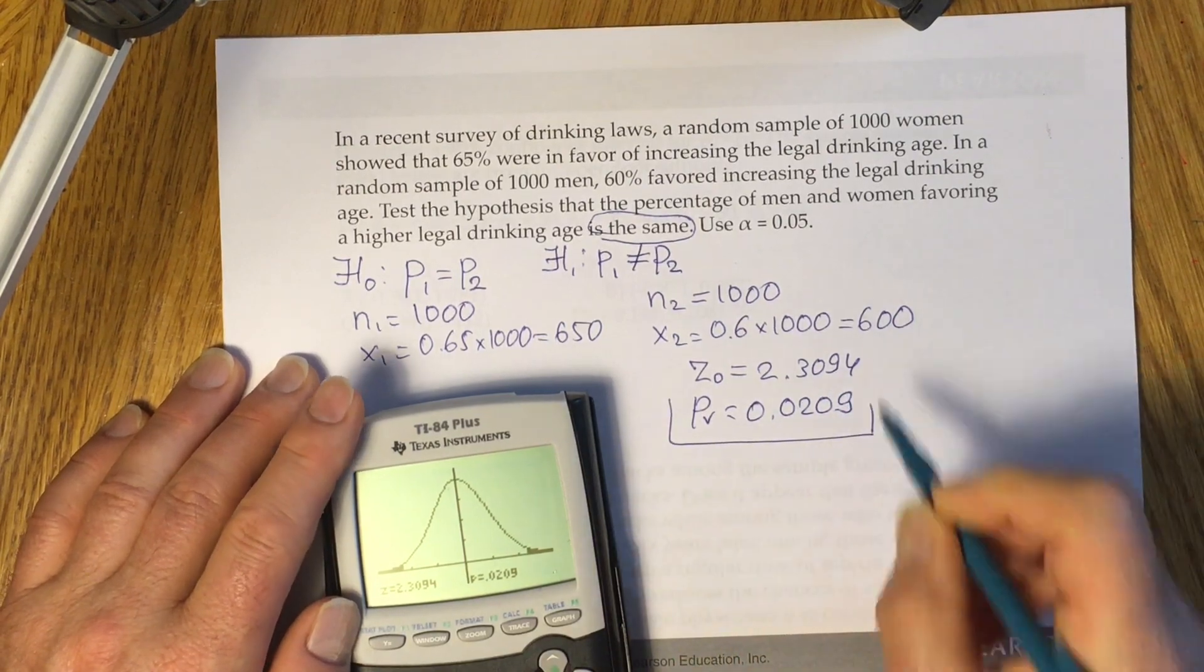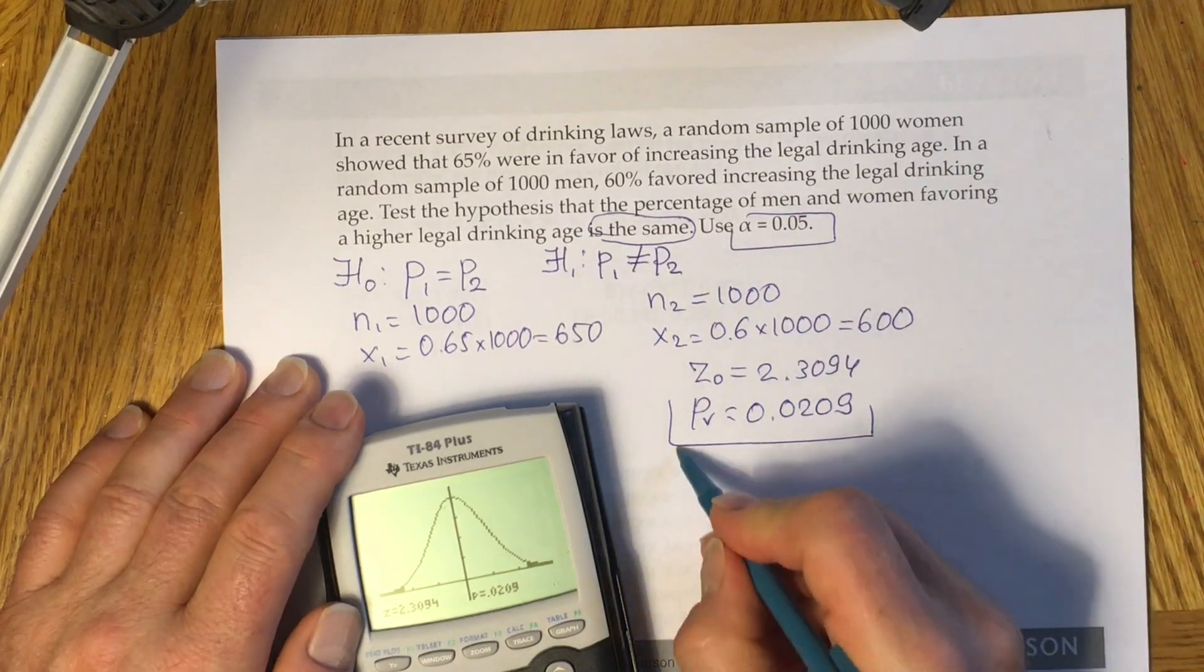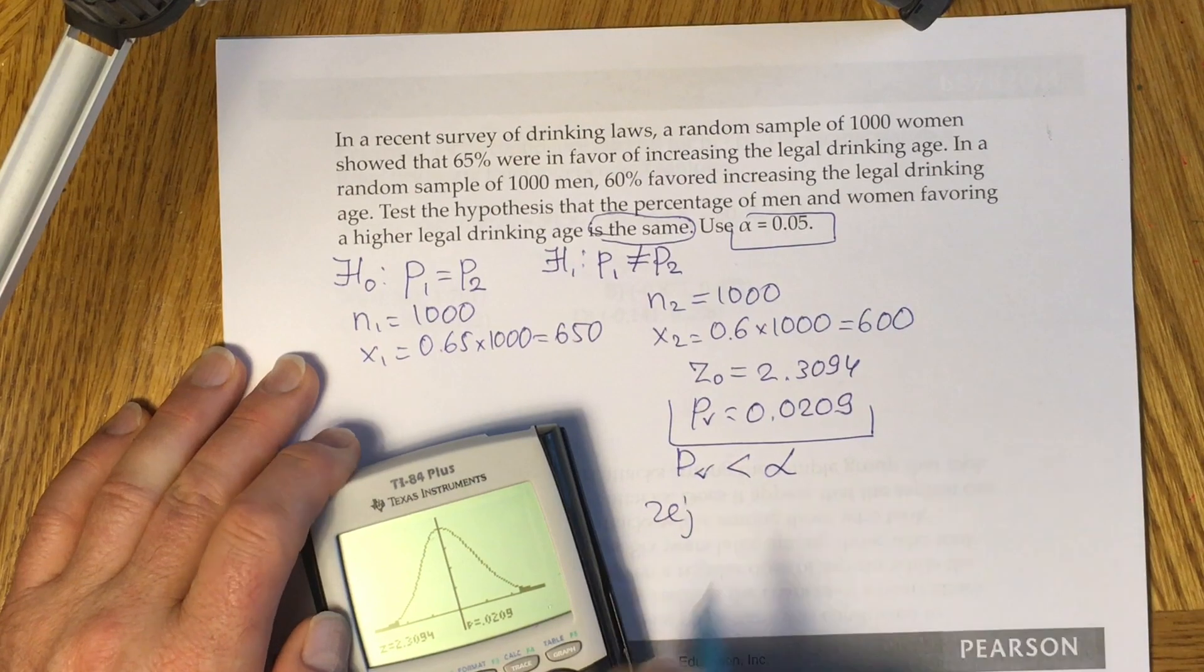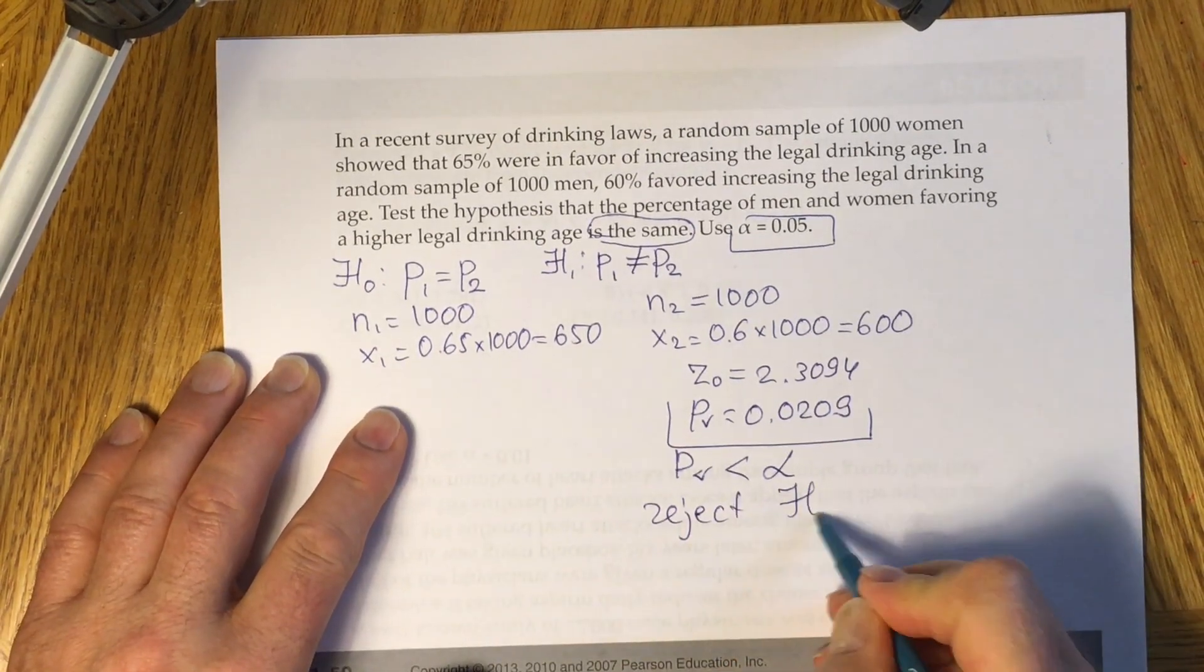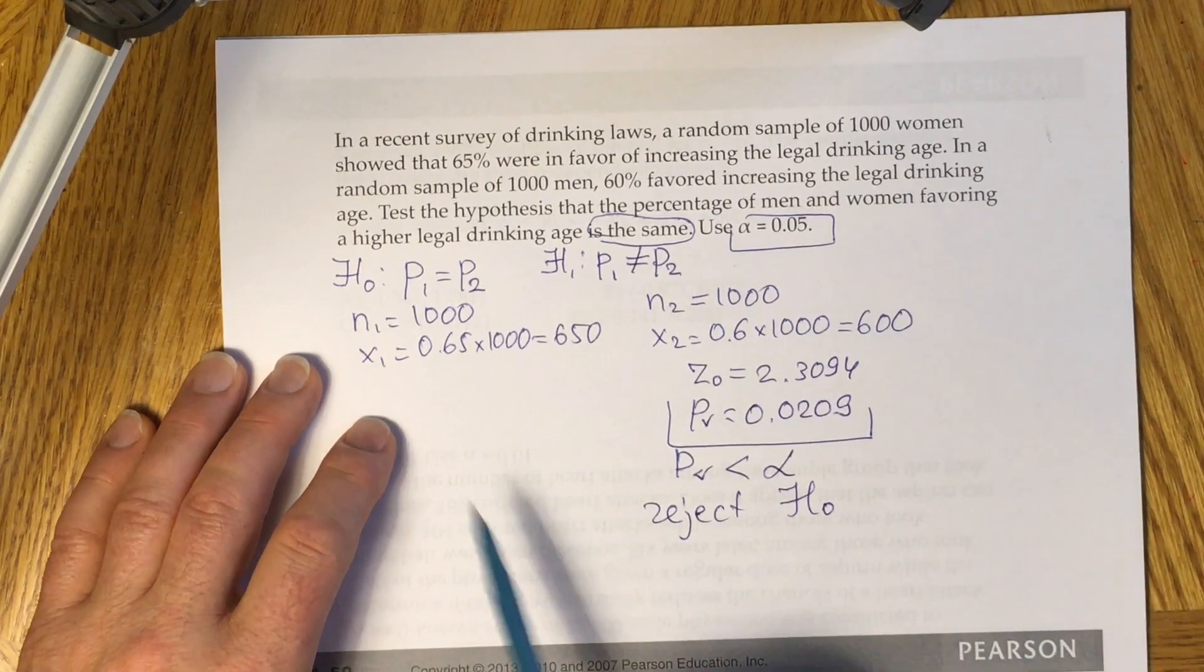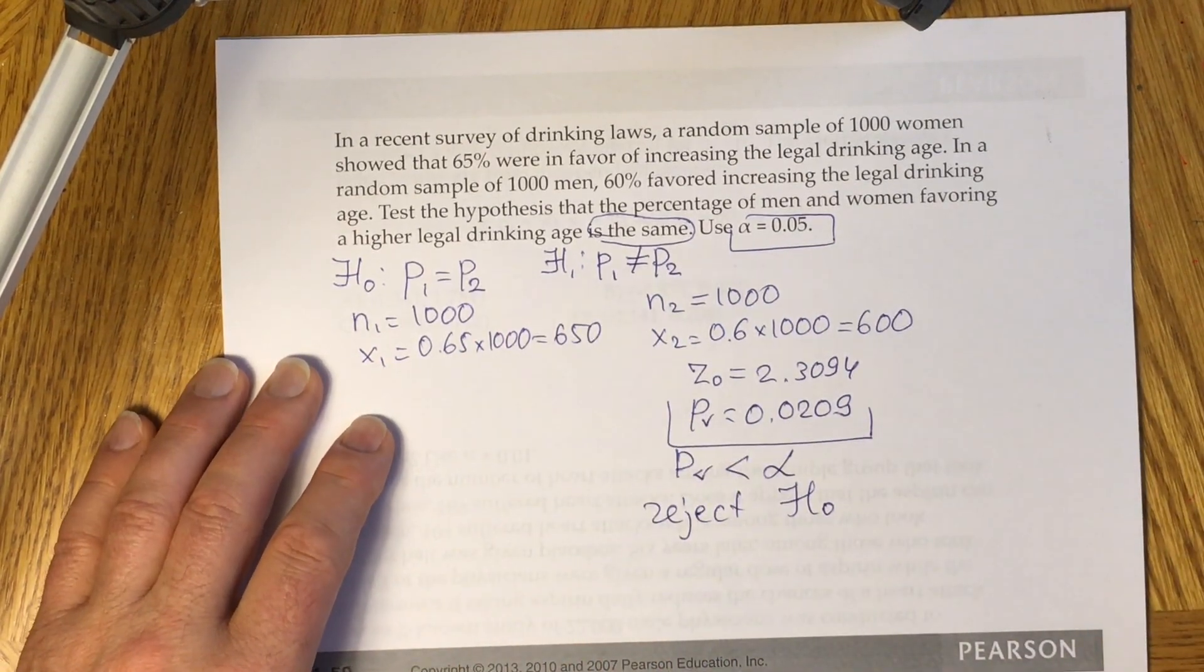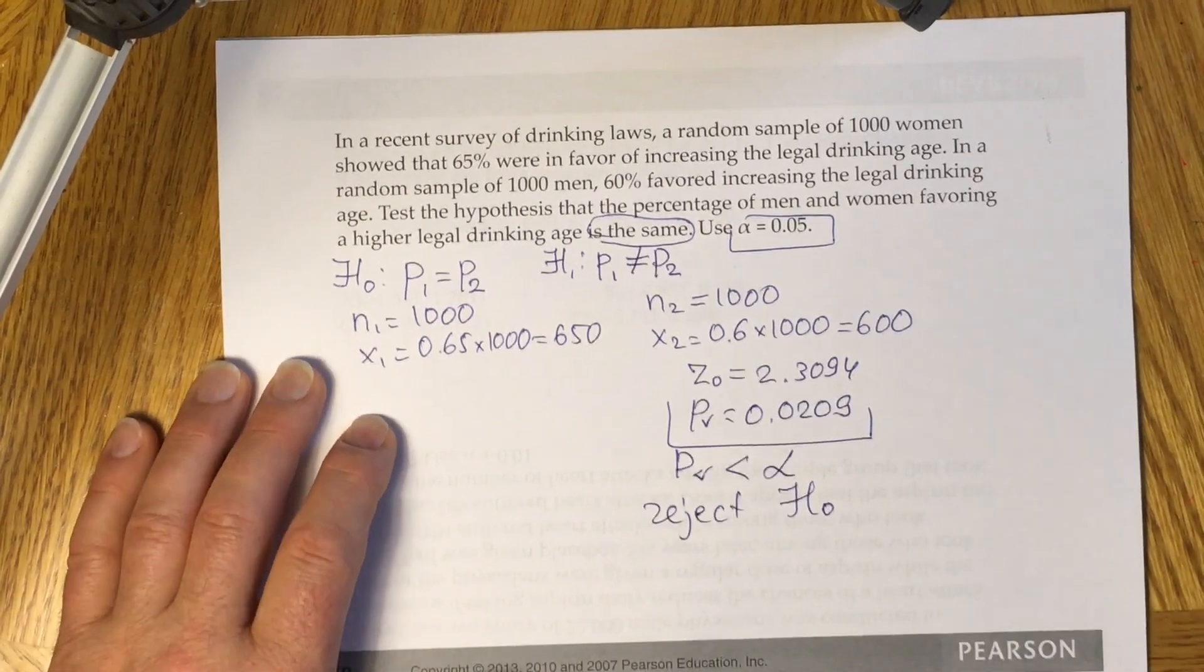Then you have to compare p-value with your alpha. In our case alpha is 5%. Clearly p-value is less than alpha, so you have to make a decision to reject null hypothesis. If you reject null hypothesis you indirectly support alternative hypothesis. And you see that indeed we have the case that the percentages are different for men and women.